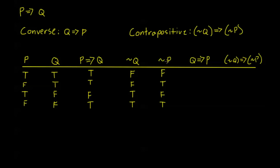Q implies P means Q is false or P is true. P is true in the first and third rows, and Q is false in the last row. In the second row, Q is true and P is false — that's the only case where Q implies P is false. Now, not Q implies not P: not Q is false — making the implication true — in the first two cases; or not P is true in the last case; and false in the third row.